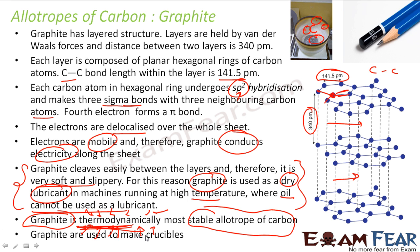Graphite is also used to make crucibles, because of its very high melting point. Crucibles are containers used to melt other substances. For example, if I want to melt iron, I cannot use aluminum or steel utensils — they would burn. I need a container that can withstand very high temperatures. If I want to melt gold or aluminum, I use a graphite crucible because graphite can withstand high temperatures.